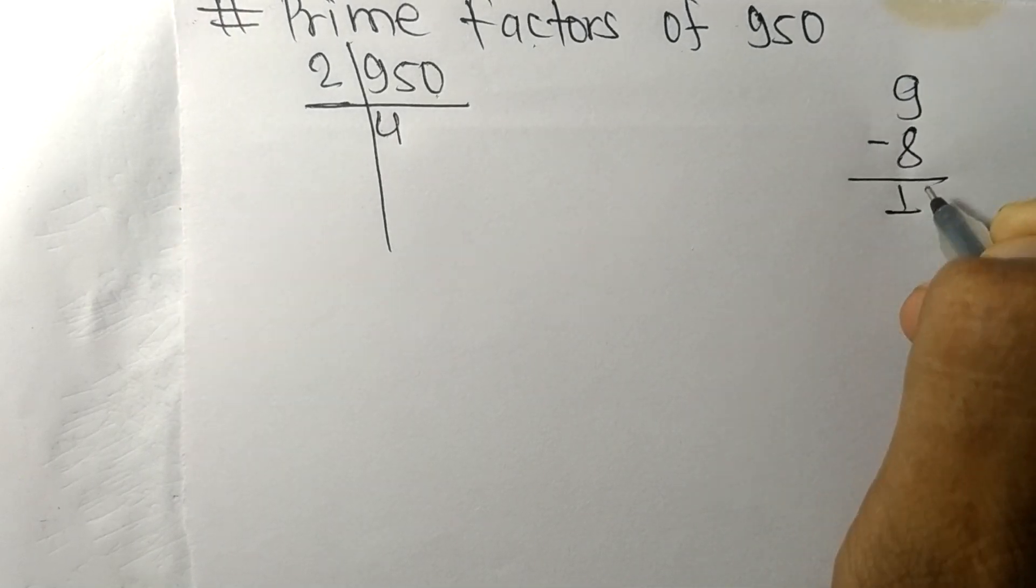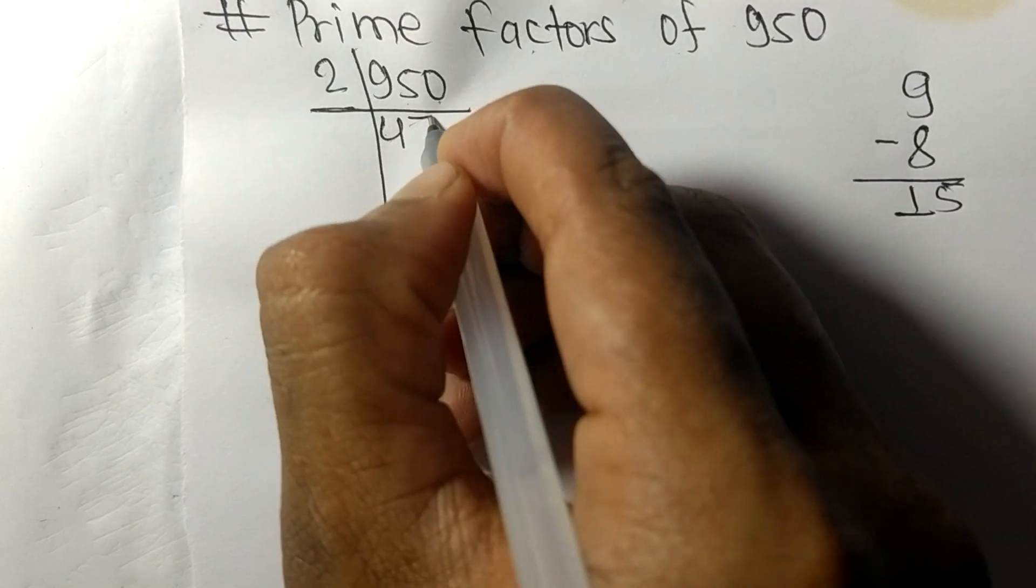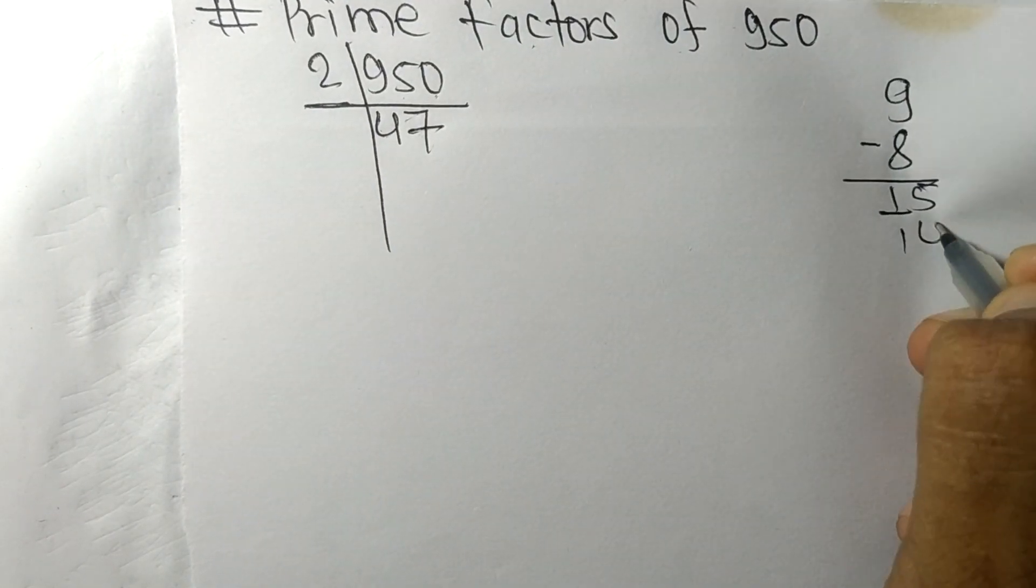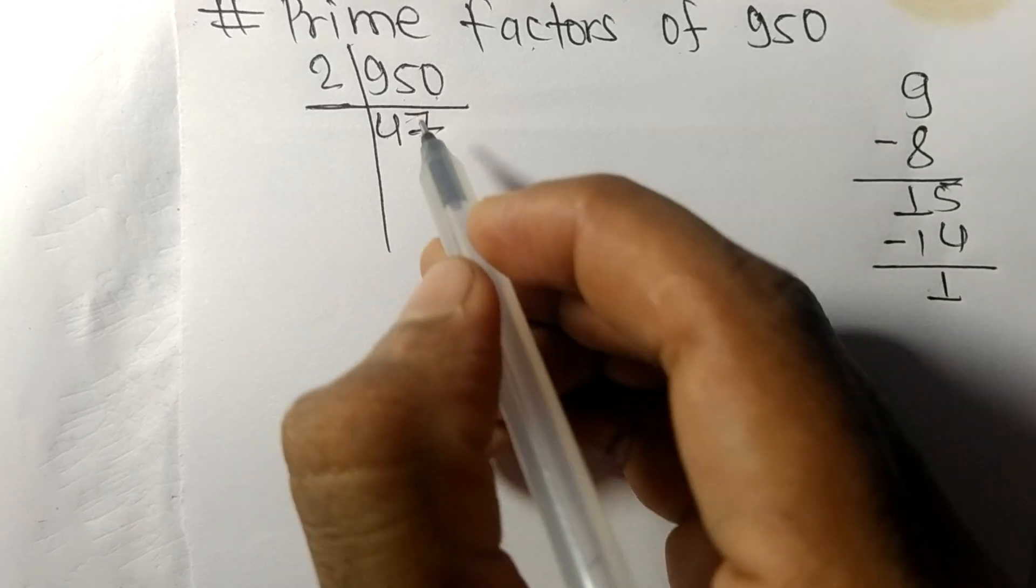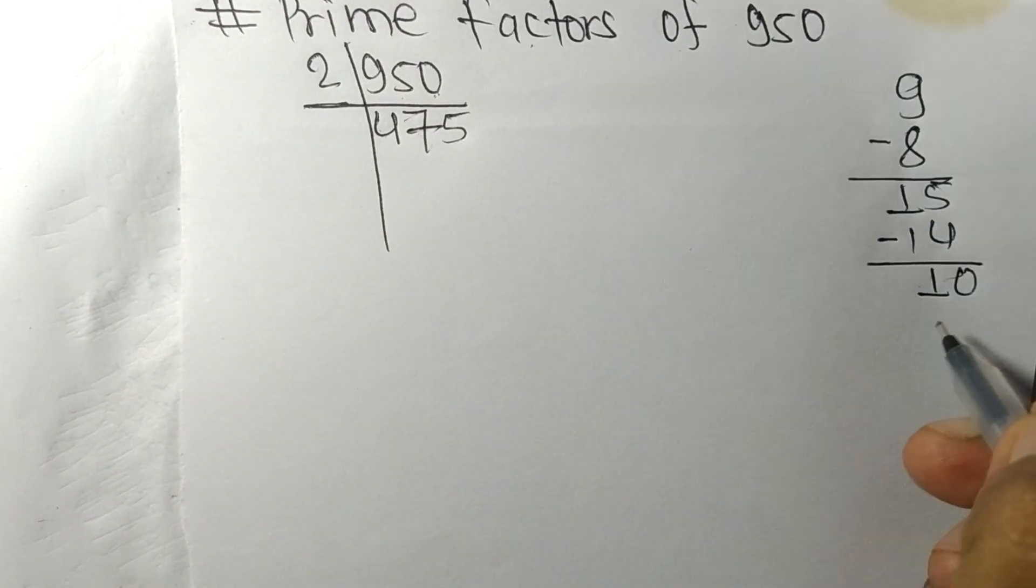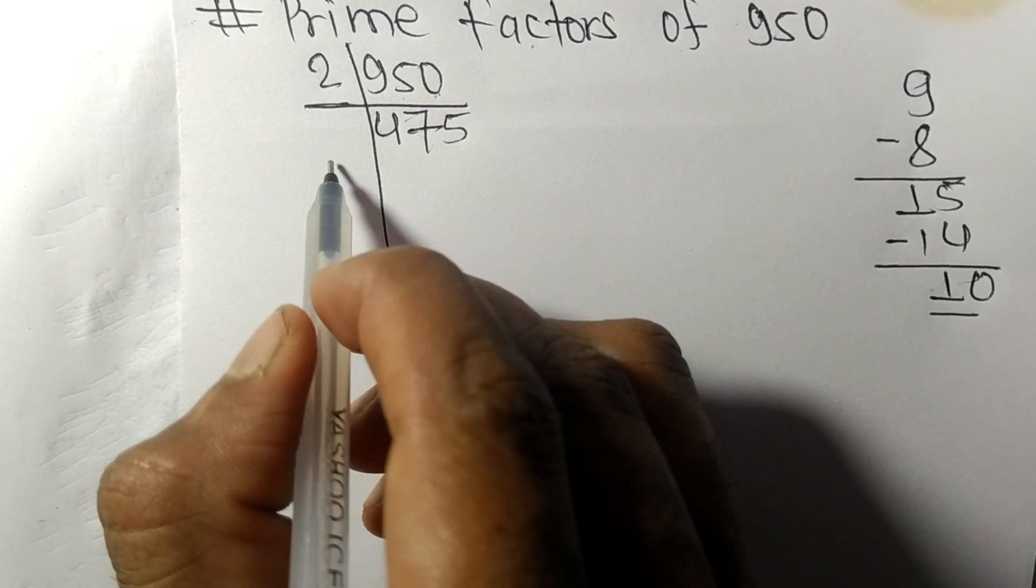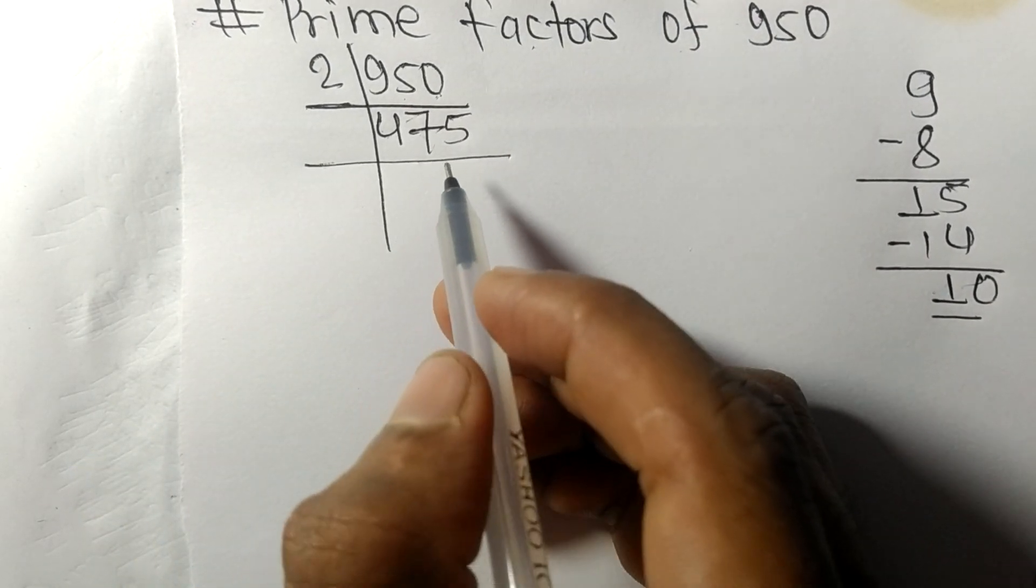This five, fifteen. Two times seven means fourteen. On subtracting we get one. This zero, ten. Two times five means ten. So now we got four hundred seventy five, and it contains five at last.